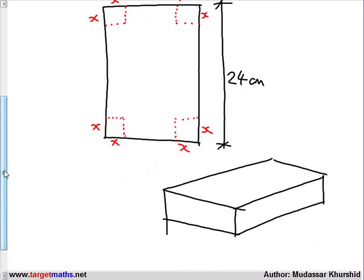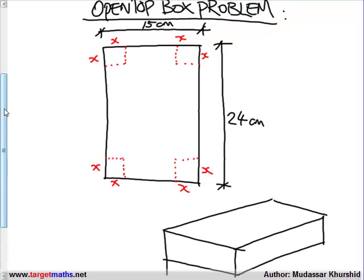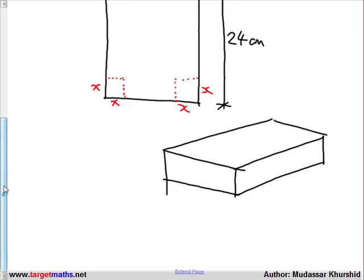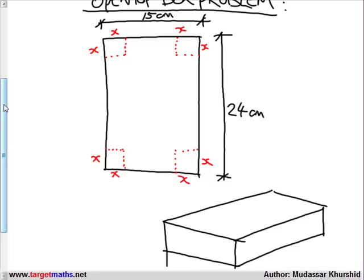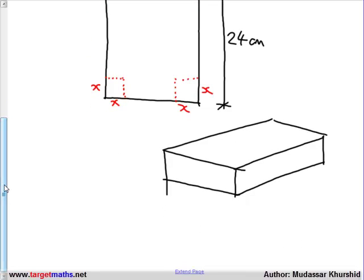If we cut off square pieces from each corner of dimensions x by x, the dimension of the box that we will make will obviously change from the original dimensions of 15 by 24. What will be the new dimensions of the box that we will actually create? We take the original dimensions and take off 2x from each side. The dimensions will now be 15 minus 2x, and the length will now be 24 minus 2x, and the height of the box will be x.